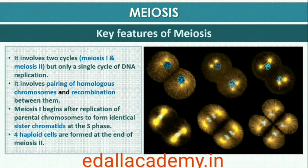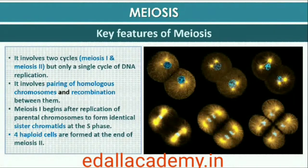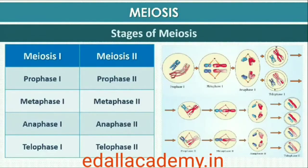The key features of meiosis are as follows: Meiosis involves two sequential cycles of nuclear and cell division called meiosis I and meiosis II, but only a single cycle of DNA replication. Meiosis I is initiated after the parental chromosomes have replicated to produce identical sister chromatids at the S phase. Meiosis involves pairing of homologous chromosomes and recombination between them. Four haploid cells are formed at the end of meiosis II.